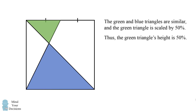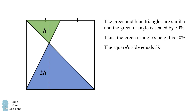Consequently, the green triangle's height is 50% of the blue triangle's height. So if this height is h, the blue triangle's height has to be twice as big, which is 2h. This means the square's side length is equal to 3h.